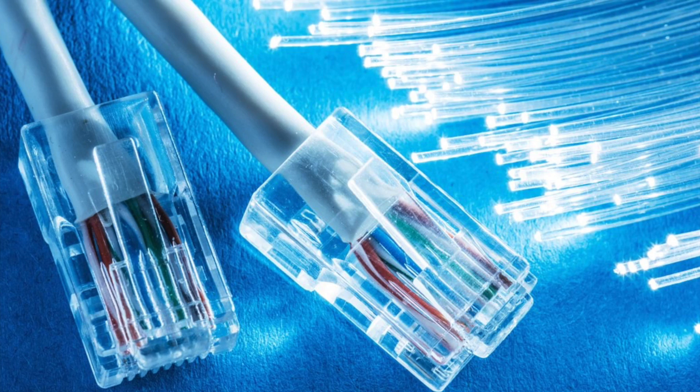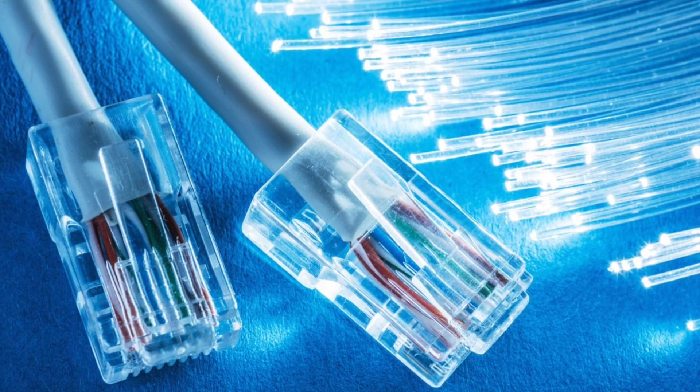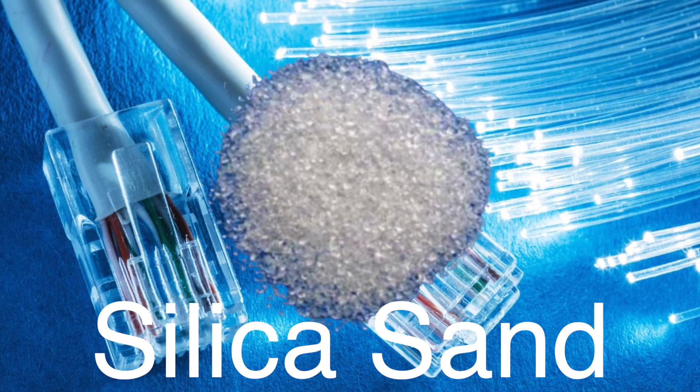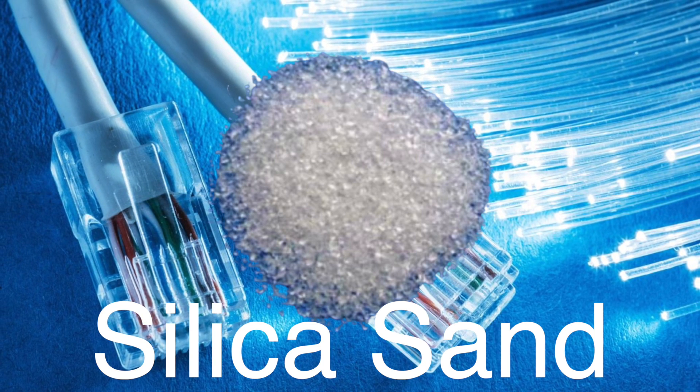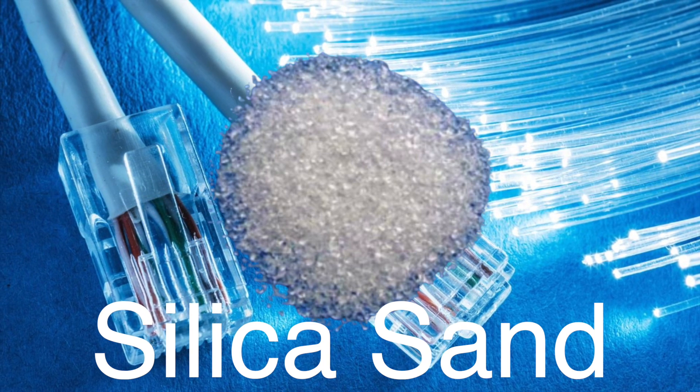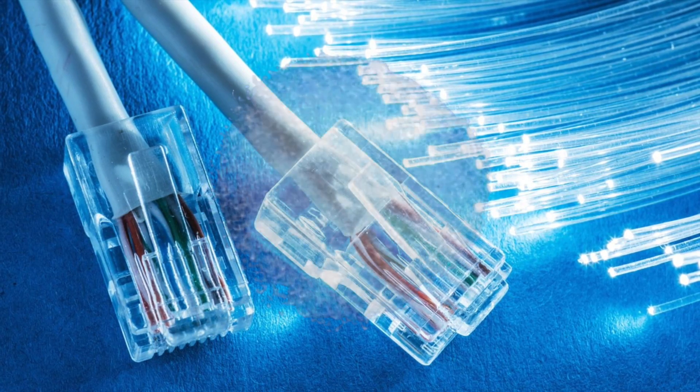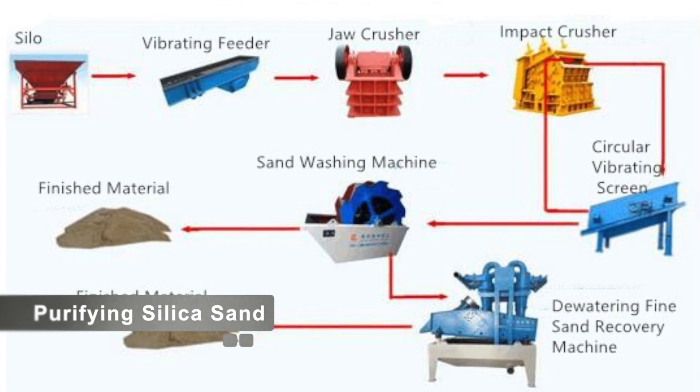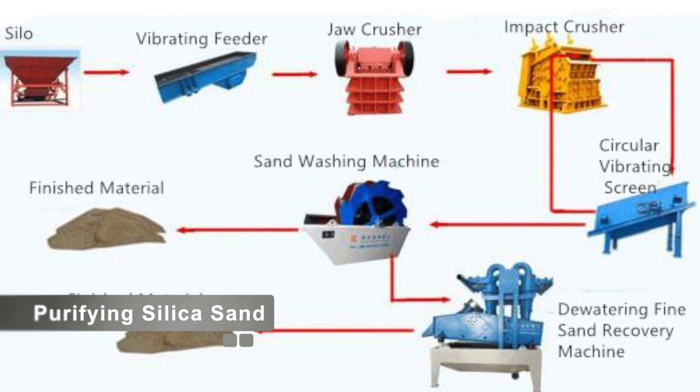Now, the production of a fiber optic cable begins with its core material, silica sand. Silica sand is abundant and serves as the primary ingredient for producing glass, which is a key component of fiber optic cables. The first step is to purify the silica sand to remove impurities, ensuring the highest quality glass.